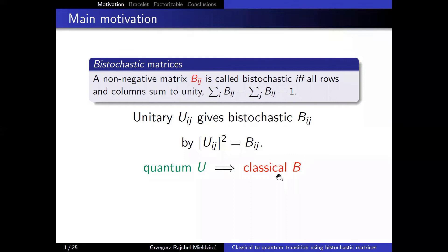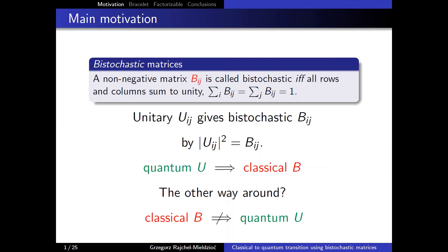Can we do it the other way around? If we have a bistochastic matrix, can we obtain a quantum unitary matrix? Well, it turns out that it's not always possible. This problem will be the most important one I will talk about today.